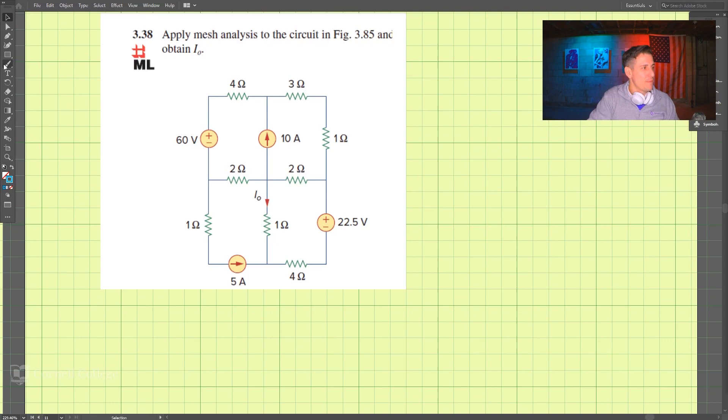Okay, so let's do problem 338. We're doing a mesh analysis and we're looking for the current here. Let's do our loops. We have I1 and...